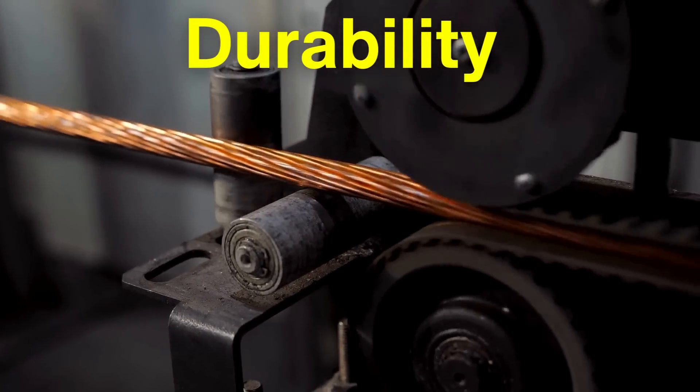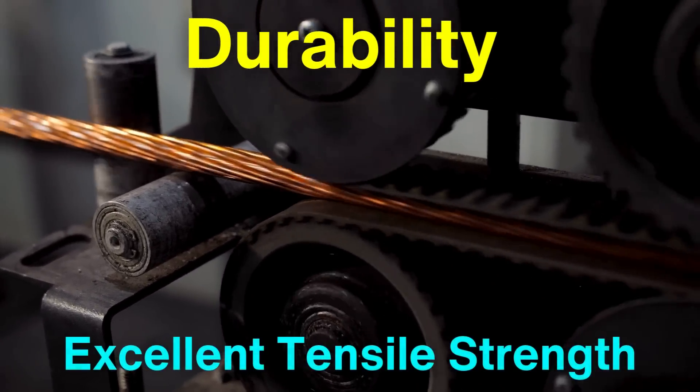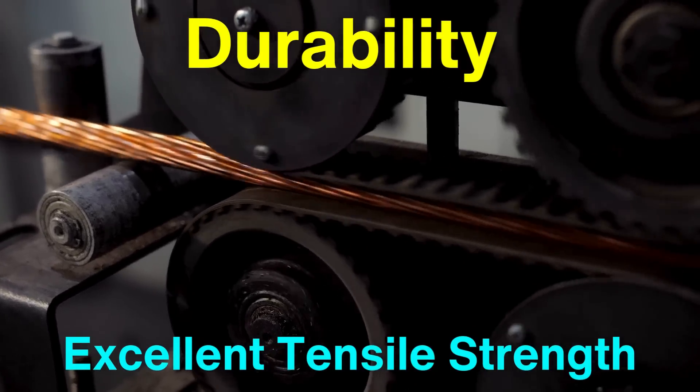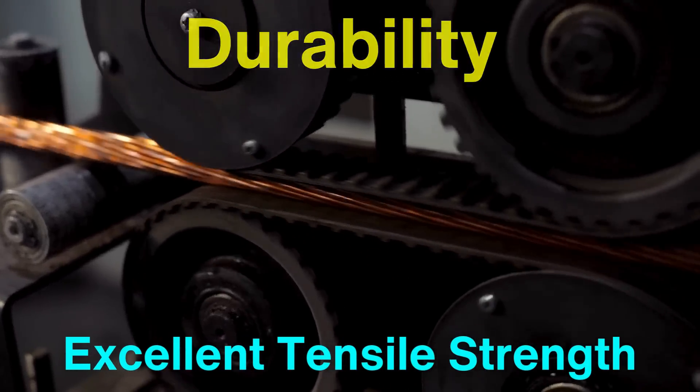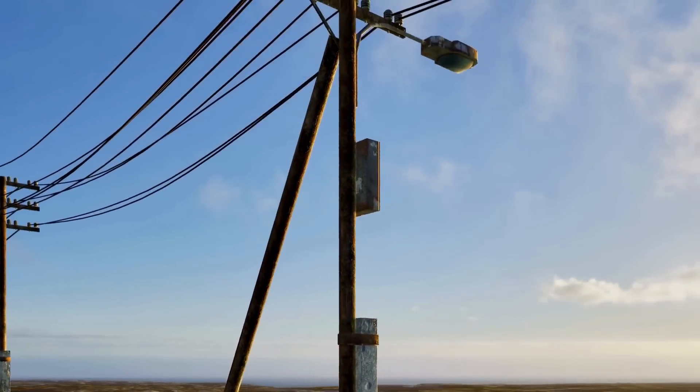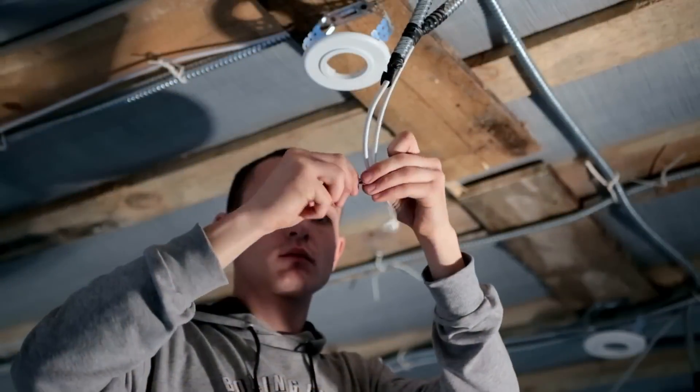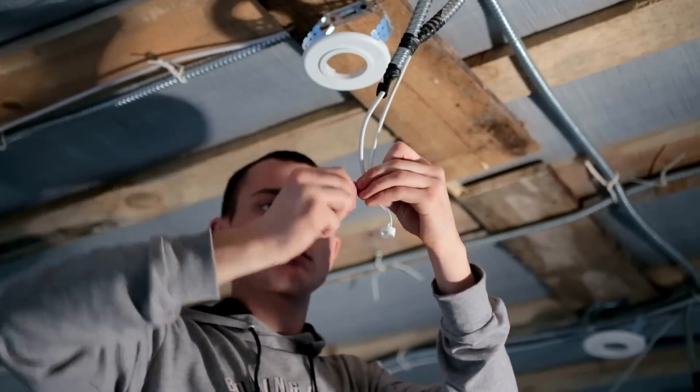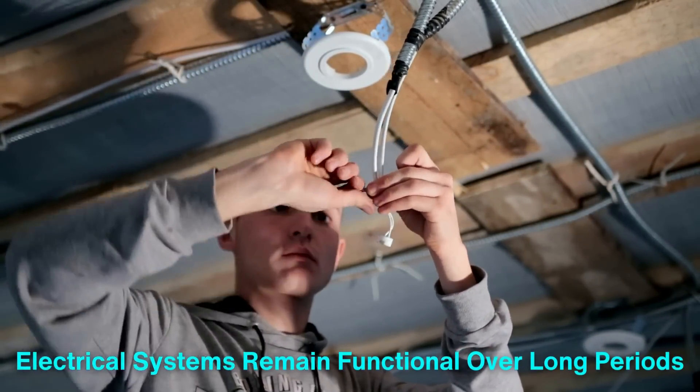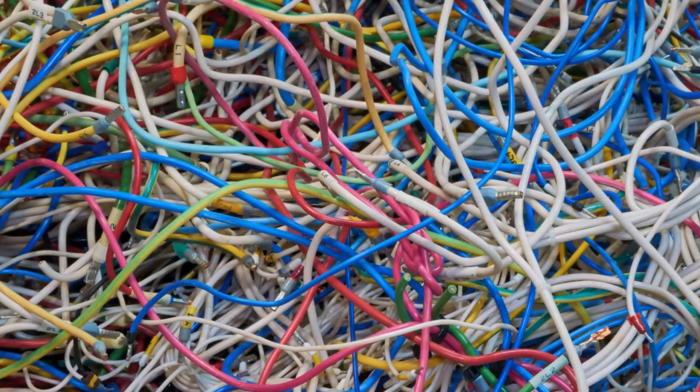Durability is another key factor in copper's use for wiring. Copper has excellent tensile strength, which means it can withstand mechanical stresses without breaking. This is vital for installations where wires might need to be pulled through walls, bent around corners, or exposed to vibrations. The resilience of copper wiring ensures that electrical systems remain functional over long periods with minimal maintenance.